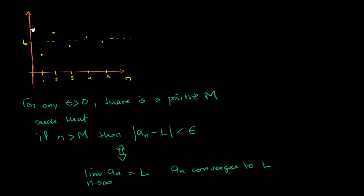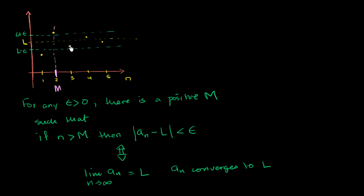So let me pick an epsilon greater than 0. I'm going to mark L plus epsilon up here and L minus epsilon down here. So let me draw those two bounds. For any arbitrary positive epsilon I pick, we can find a positive M — let's say that is our M right over there — so that as long as n is greater than M, then a sub n is within epsilon of L. Being within epsilon of L essentially means being in this range between L minus epsilon and L plus epsilon.